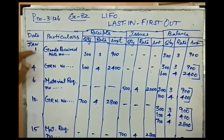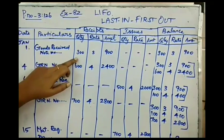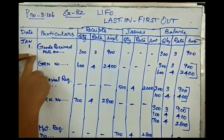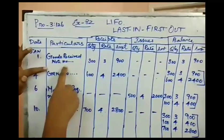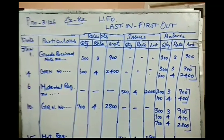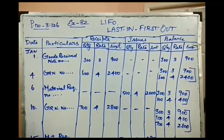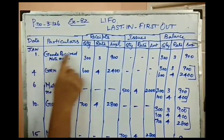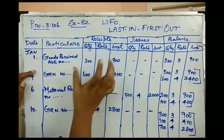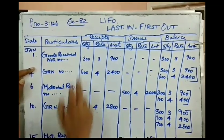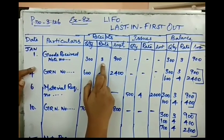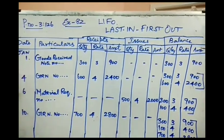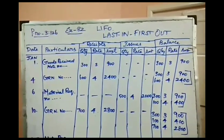The first transaction starts from January 1st. It is a purchase of 300 units at a rate of ₹3 per unit, giving a total value of ₹900. This is recorded in the Receipt column under the Goods Received Note number. The balance column is also updated with 300 units at ₹3, amounting to ₹900.